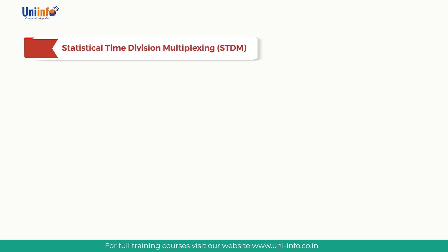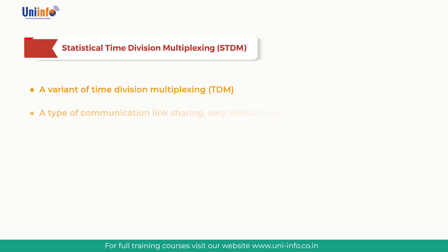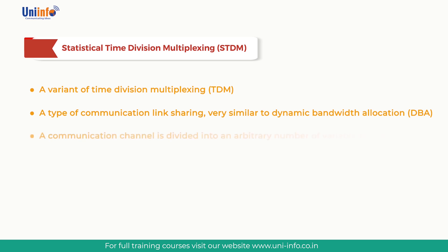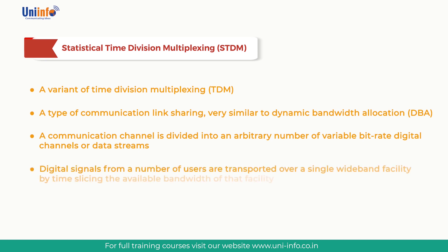Statistical time division multiplexing is a variant of TDM and a type of communication link sharing, very similar to dynamic bandwidth allocation. In statistical multiplexing, a communication channel is divided into an arbitrary number of variable bitrate digital channels or data streams, and link sharing is adapted to the instantaneous traffic demands. In TDM, digital signals from a number of users are transported over a single wideband facility by time-slicing the available bandwidth. Simple TDM assumes a synchronous nature — time slices are all of equal sizes, and users cycle through the time interval in a fixed cycle, giving each user a constant bandwidth channel with fixed delay characteristics.